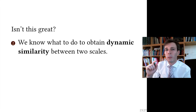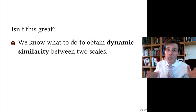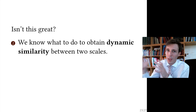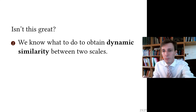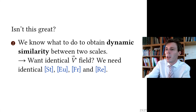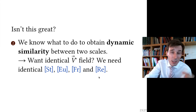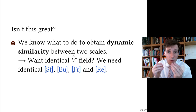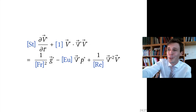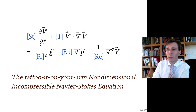The second reason this is great is that we now know how to obtain dynamic similarity between two scales — which is what we started with. Dynamic similarity between a miniature and a full-scale flow means having the same unit vectors oscillating and vibrating as in the original flow. To achieve this, you need the same Strouhal number, the same Euler number, the same Froude number, and the same Reynolds number in your miniature version — which in practice is very difficult, but at least from the physical point of view we know what we need to do.